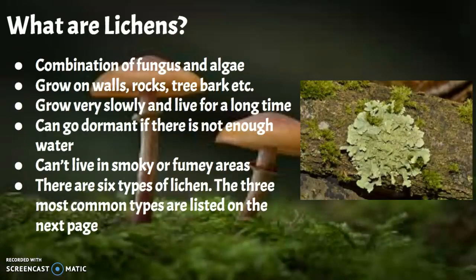What are lichen? It's a combination of fungus and algae. It grows on walls, rocks, tree bark, etc. They grow very slowly and live for a long time. But if there's not enough water, they can go dormant, which means they stop growing. If it's really smoky or there's lots of fumes, they won't grow there. And there are six different types of lichen.